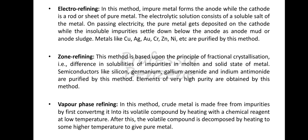Next is zone refining. This method is based on the principle of fractional crystallization — the difference in solubilities of impurities in the molten and solid state of the metal. Semiconductors like silicon, germanium, gallium, arsenic, indium, and boron are purified by this method. Elements of very high purity are obtained, making it ideal for semiconductor materials.